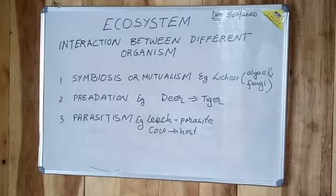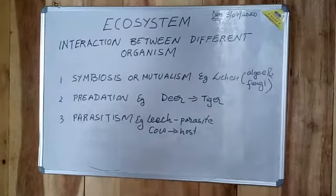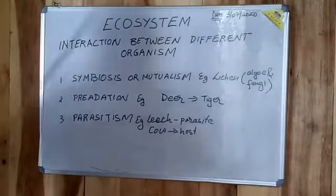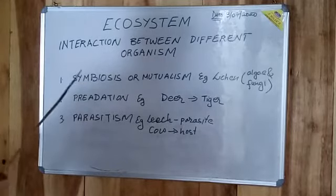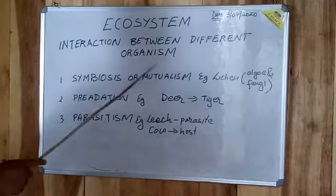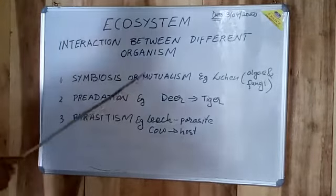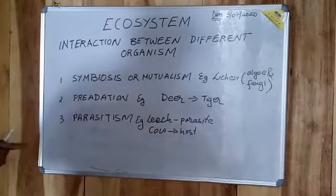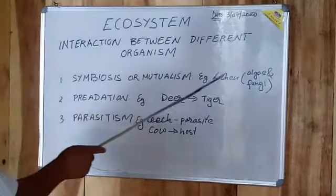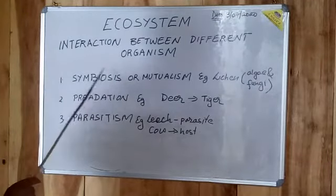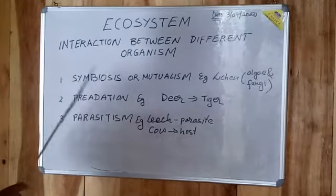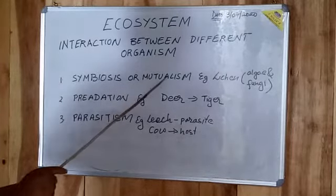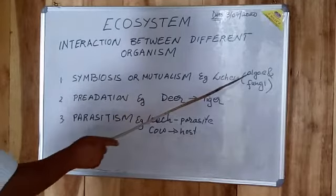Here we will try to understand the interaction between different organisms in the ecosystem. The first one is symbiosis or mutualism. What it says about symbiosis or mutualism is: when two organisms live in association with one another and both of them benefit, that type of association is known as symbiosis or mutualism.